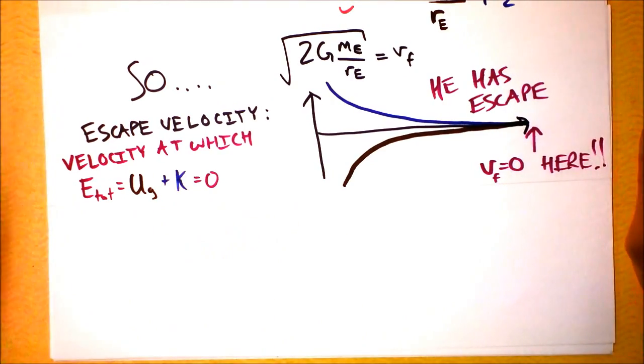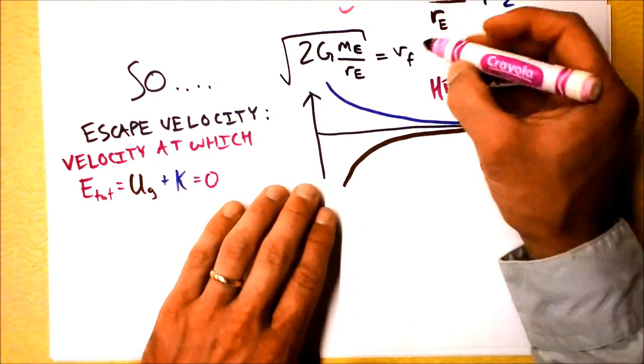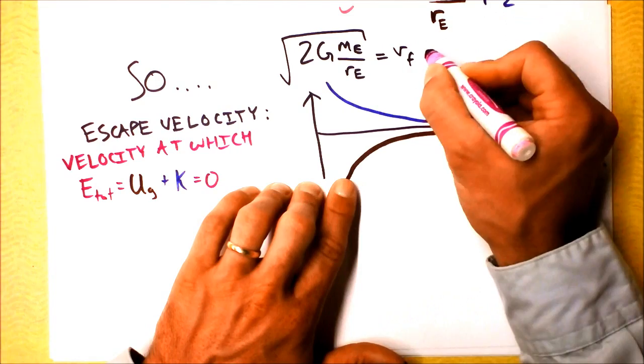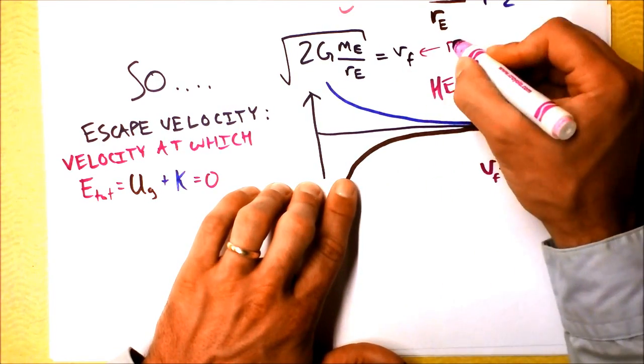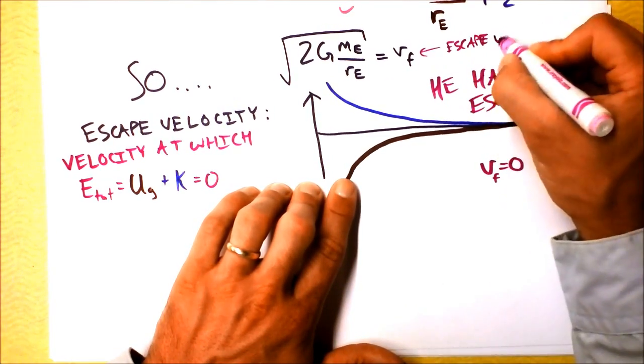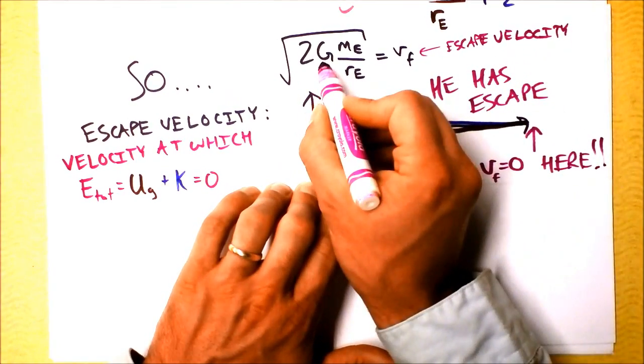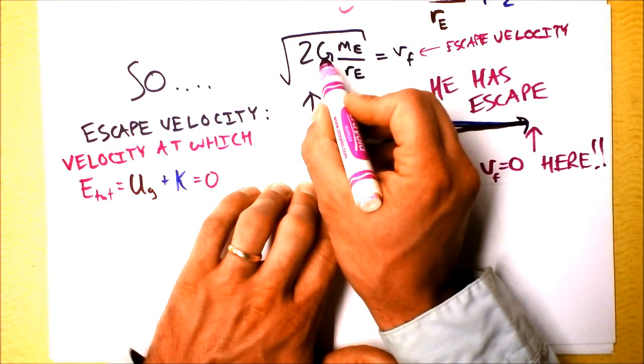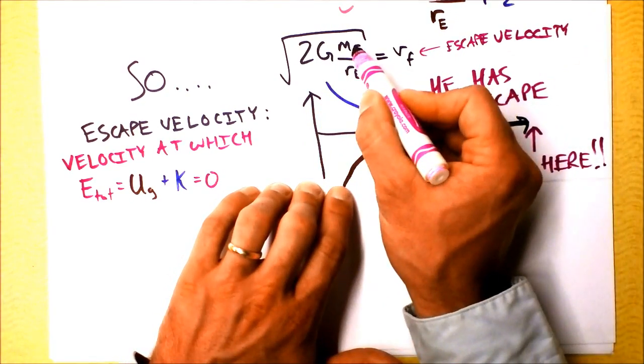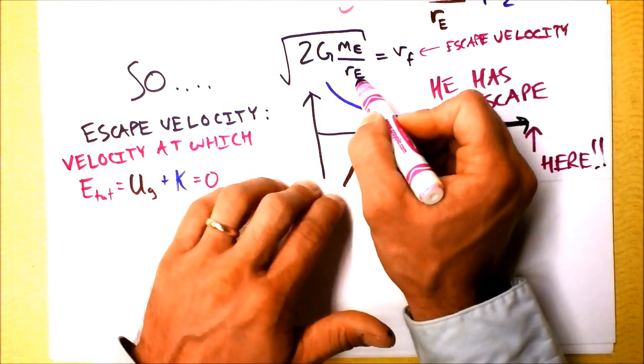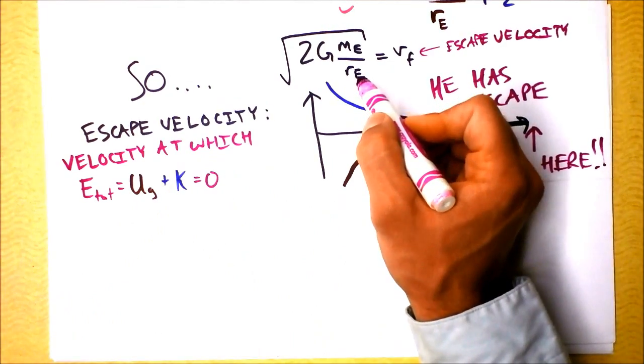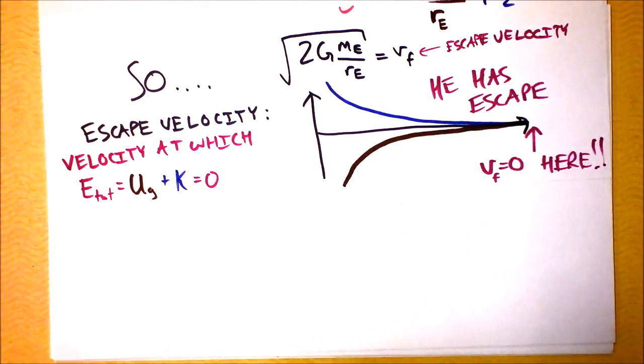This is the escape velocity - it's right there. It depends on just a couple things: the gravitational constant of the universe, a really pathetically small number, and it depends on the mass of the thing you're escaping and how far away from the thing you're escaping you are.